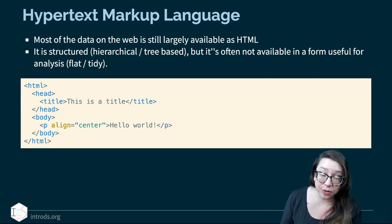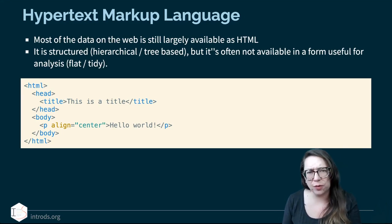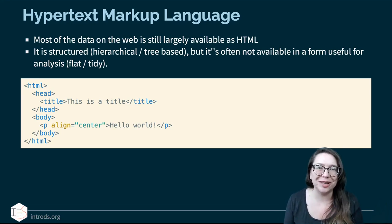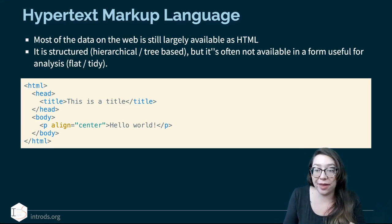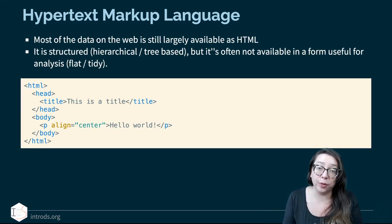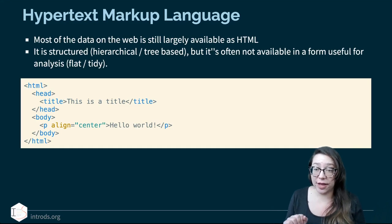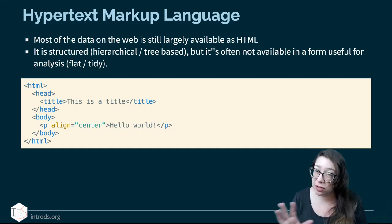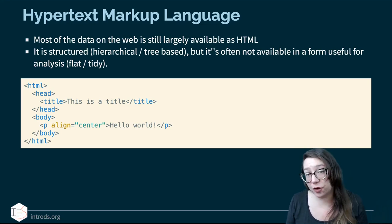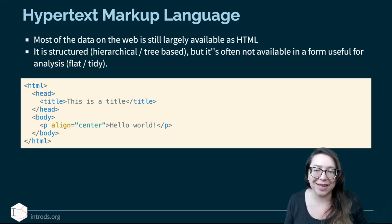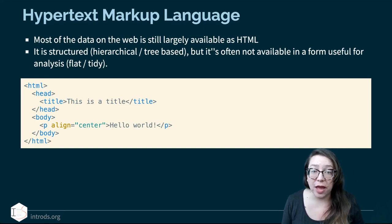If we wanted to use this in R as a data frame, we wouldn't want our data to look like that — we would need it to look rectangular. Maybe you would have a column for head and a column for body, with the text associated with each in the appropriate columns. This structured HTML code is hierarchical or tree-based, but it's often not available in a form that's useful for analysis. For that, we usually want flat data that's tidy — in rectangular format where rows are observations and columns are variables. Enter RVEST.